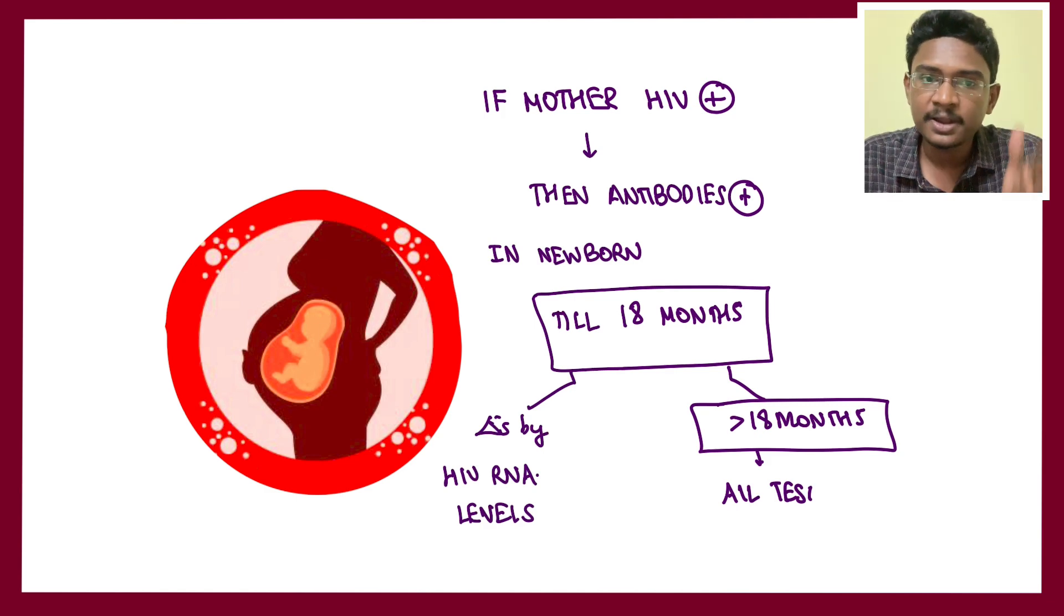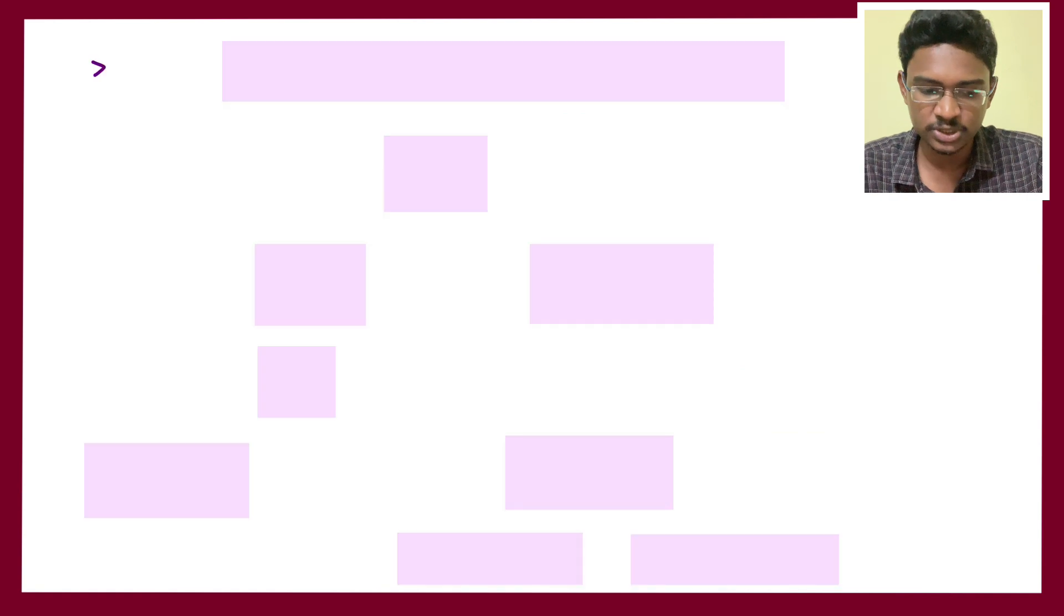NACO has kept a cutoff of 18 months. Before 18 months of a newborn, if you want to check, you should do HIV PCR levels because if HIV PCR is positive, that means HIV RNA is in the body and active infection is there. After 18 months you can go for ELISA total antibody levels.